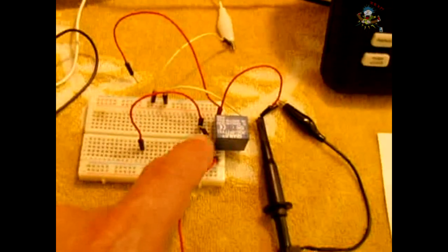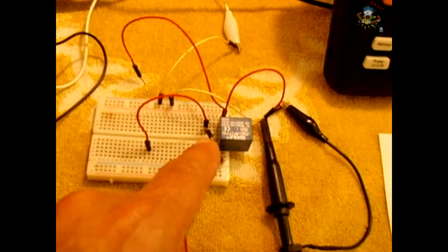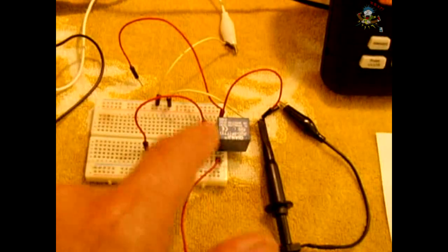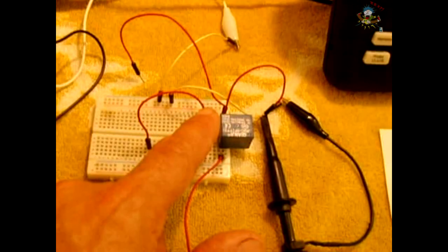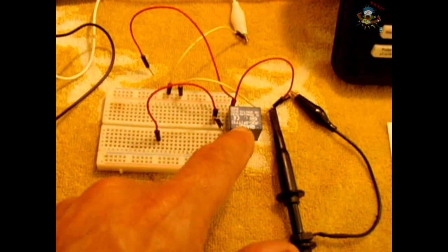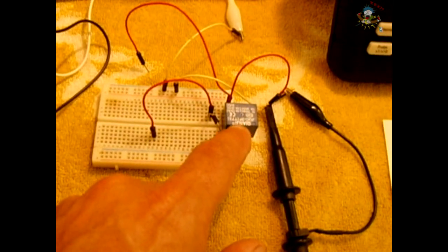And I have a diode which is not connected into the circuit right now. What I will do later on once I show you what the spikes look like without the diode I will add in the diode to show you the difference.